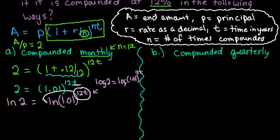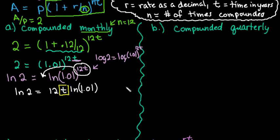Our next step would be to move our exponent out in front. So we would have natural log 2 equals 12t natural log 1.01. Then our final step to get t by itself is to divide by everything that is not t. So we would divide both sides by 12 natural log 1.01.